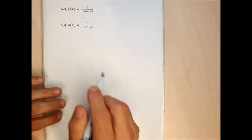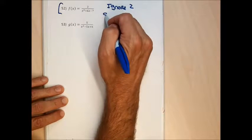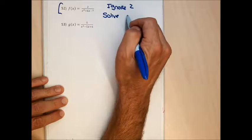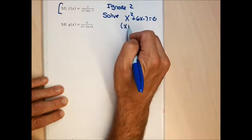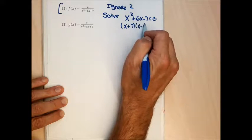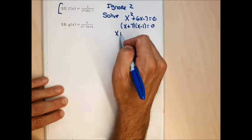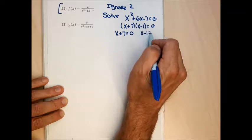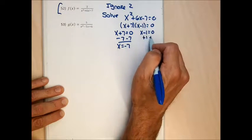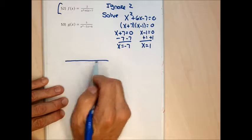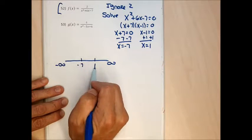For problem 52, to find the domain I ignore the numerator 2 and solve the denominator x²+6x-7 = 0. Since it's a quadratic set equal to zero, factoring is the nicest approach: (x+7)(x-1) = 0. Setting each factor equal to zero gives x = -7 and x = 1 — these are the two numbers to exclude from the domain.